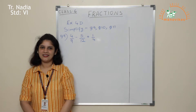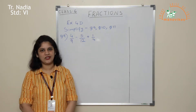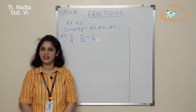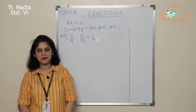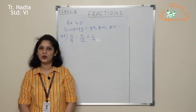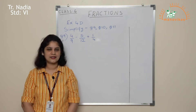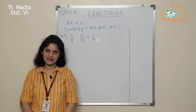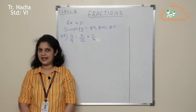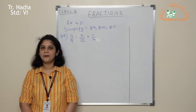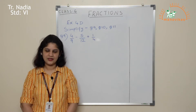Hi kids, welcome back. I hope you've started with exercise 4D and done addition and subtraction of fractions. I had already explained how to add and subtract unlike fractions and like fractions. When the fractions are unlike, you have to find the LCM, make them like, and then add or subtract them.